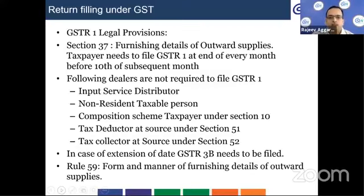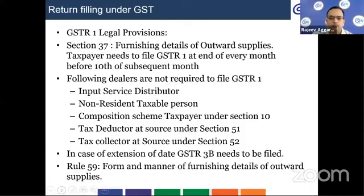Under the legal provision, Section 37 talks about GSTR1 return — specifically, furnishing details of output supplies. A taxpayer needs to file GSTR1 at the end of every month before the 10th of the subsequent month. Dealers not required to file GSTR1 include input service distributors, non-resident taxable persons, composition scheme taxpayers, tax deductors at source, and tax collectors at source. These taxpayers have separate returns prescribed for them.